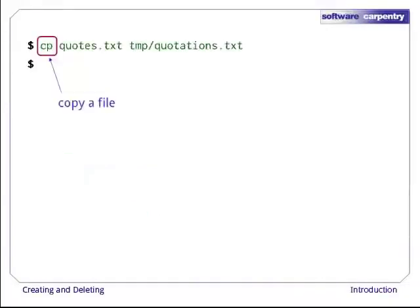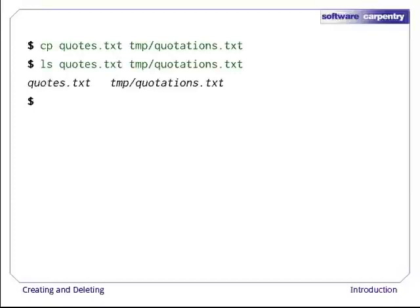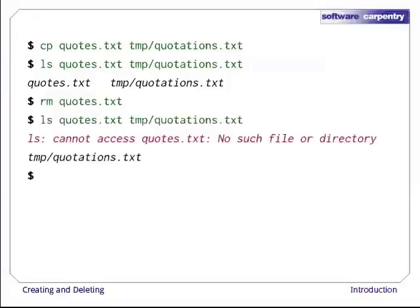The cp command works very much like mv, except it copies a file instead of moving it. We can check that it did the right thing using ls with two paths as arguments. Like many other Unix commands, ls can process up to thousands of paths at once. To prove that we made a copy, let's delete the quotes.txt file in the current directory and then run ls again. This time, ls tells us that it can't find quotes.txt in the current directory, but it does find the copy in temp, which we didn't delete.